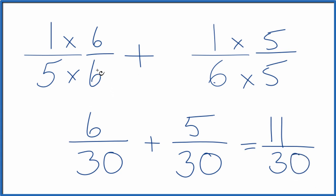So in answer to our question, one-fifth plus one-sixth, that equals eleven thirtieths. This is Dr. B. Thanks for watchin'.